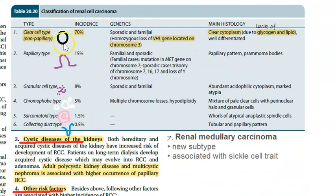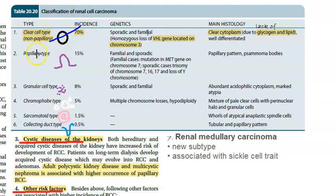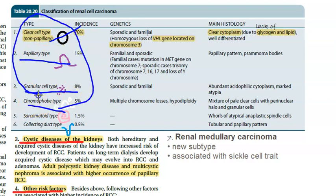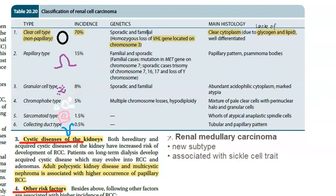In classification, there is the clear cell type, papillary type, granular type, chromophobe type, sarcomatoid type, collecting duct type, and a newer subtype - renal medullary carcinoma, which is associated with sickle cell trait. Most of these subtypes have a genetic link; for example, the clear cell type involves a gene on chromosome 3, and papillary, granular, and chromophobe types also have genetic factors.